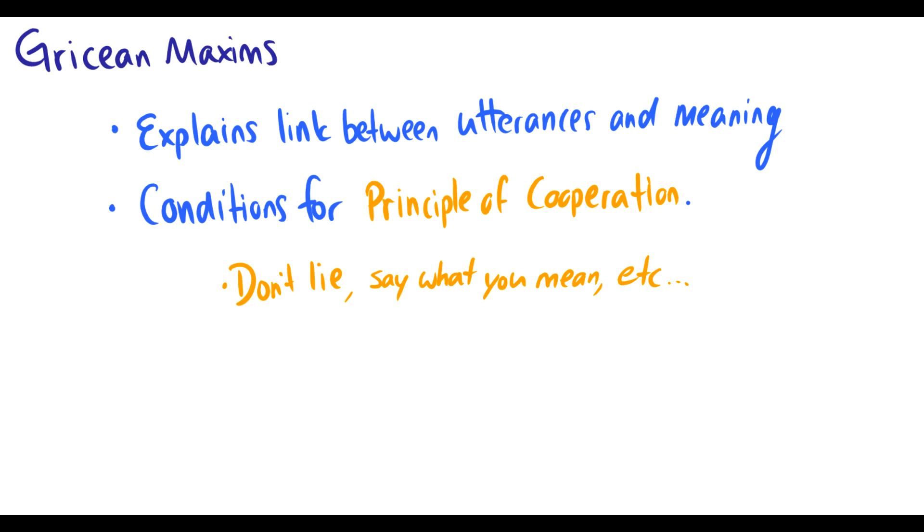So, maxims, what are they? Well, they are used to explain the link between utterances and the meaning of them, and these are all conditions for something called the principle of cooperation, which is a method how humans should interact with each other. We don't lie, we should say what we mean, we should be relevant, and we want to cooperate with other humans to have conversations that both of us understand. So these maxims guide that conversation.